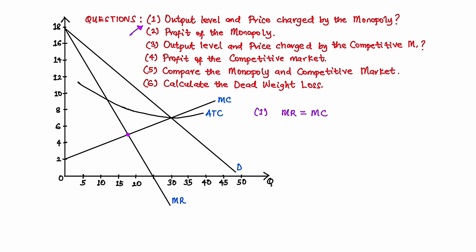So we go from the point and trace it all the way down to the horizontal axis, which represents the quantity. Then we have the quantity that the firm will produce in order to maximize profit. This quantity, Q, is approximately 17.5 units.